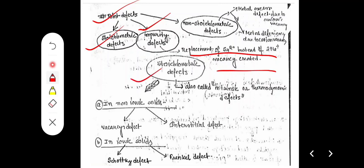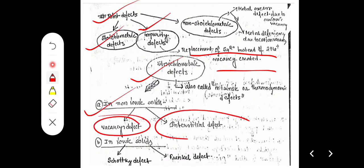Stoichiometric defect is also called intrinsic or thermodynamic defect. In non-ionic solids, we observe vacancy defect or interstitial defect. Vacancy defect arises due to some vacancy, while interstitial defect arises due to deviation at an interstitial position.